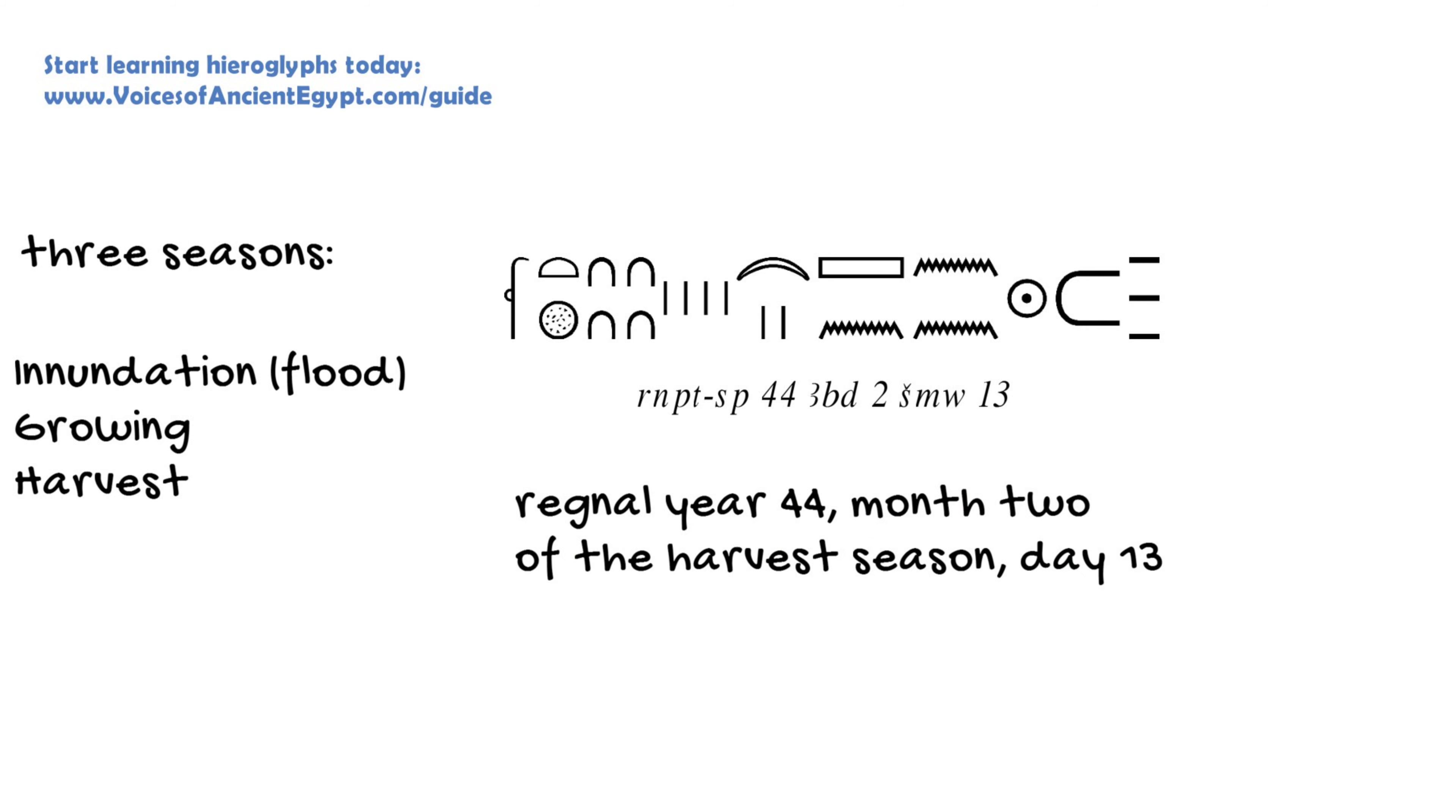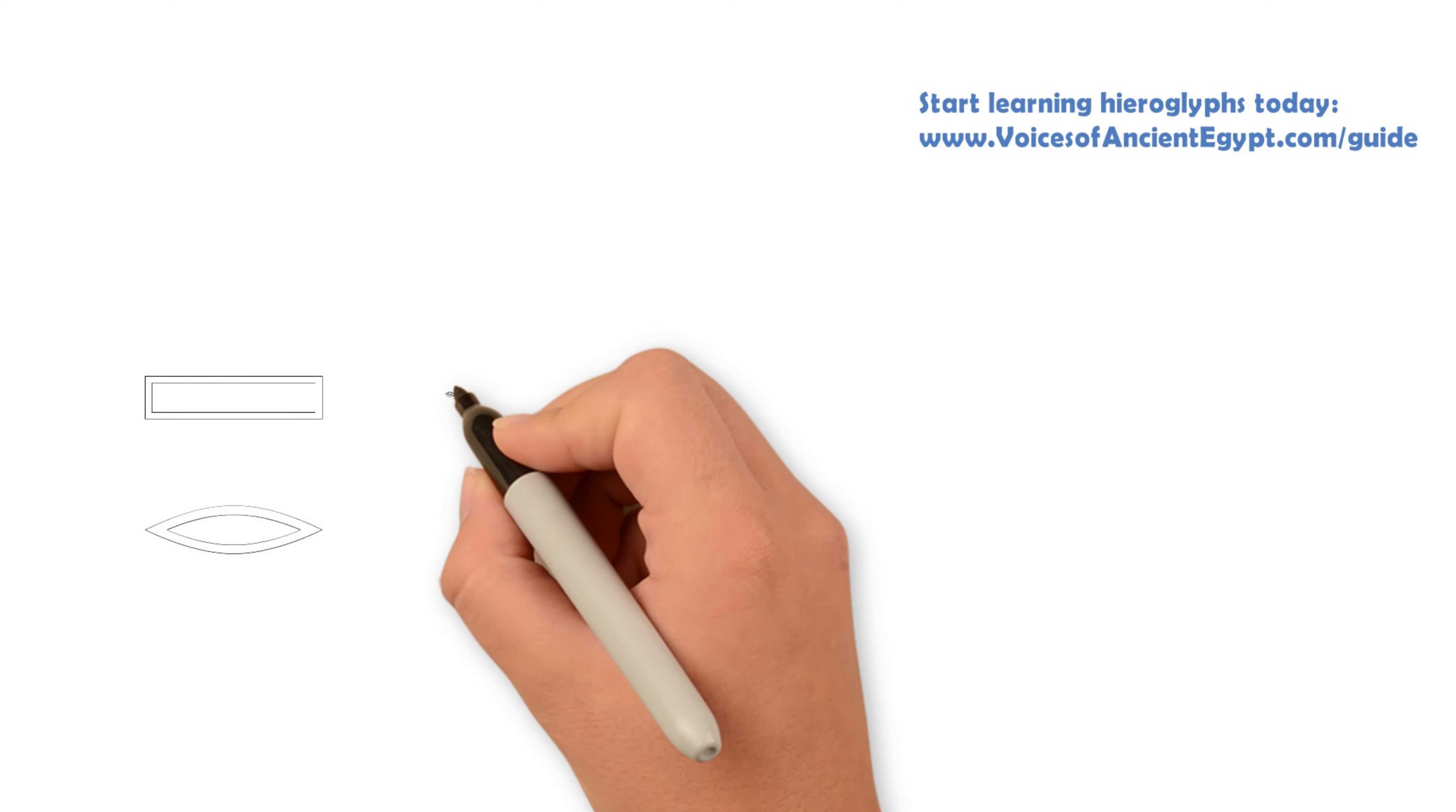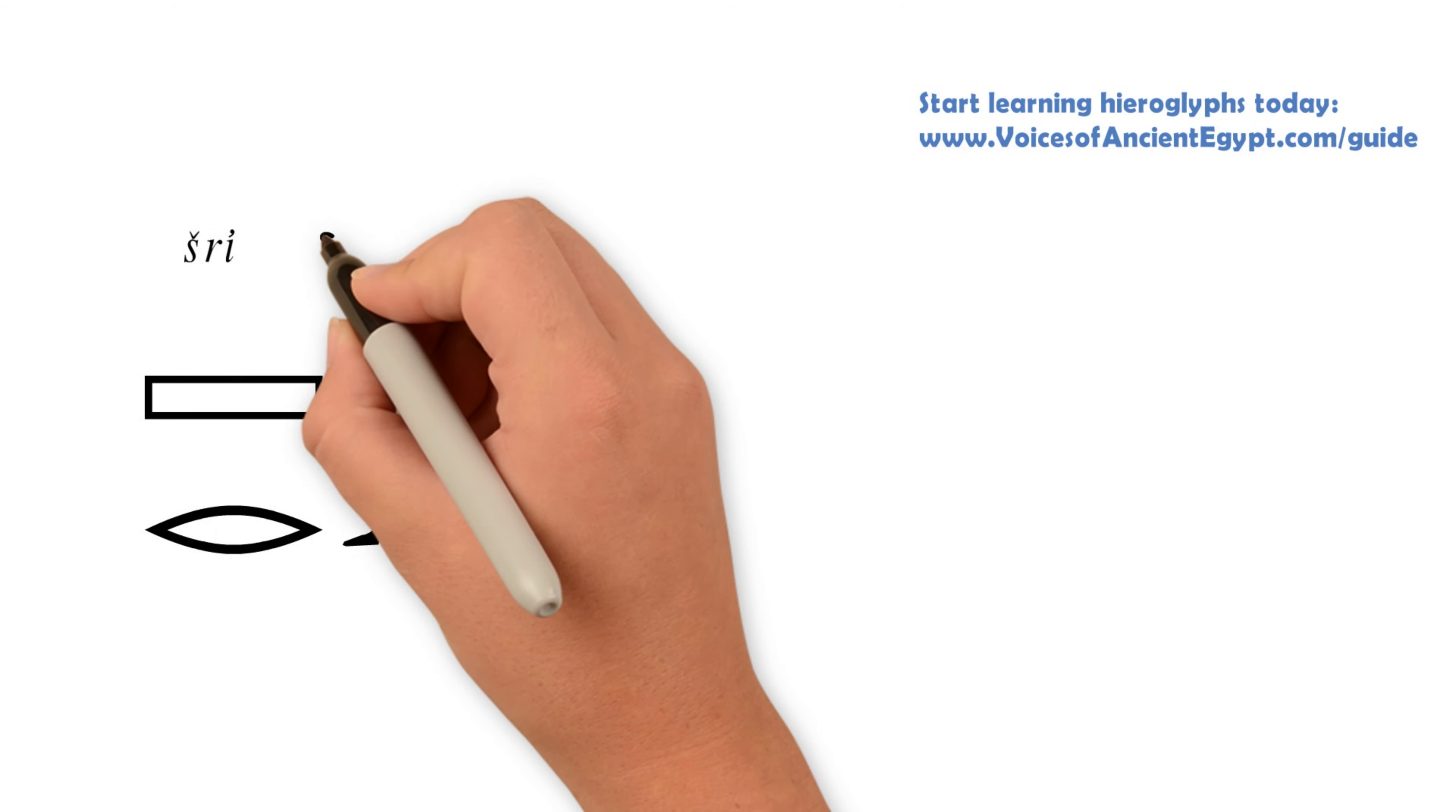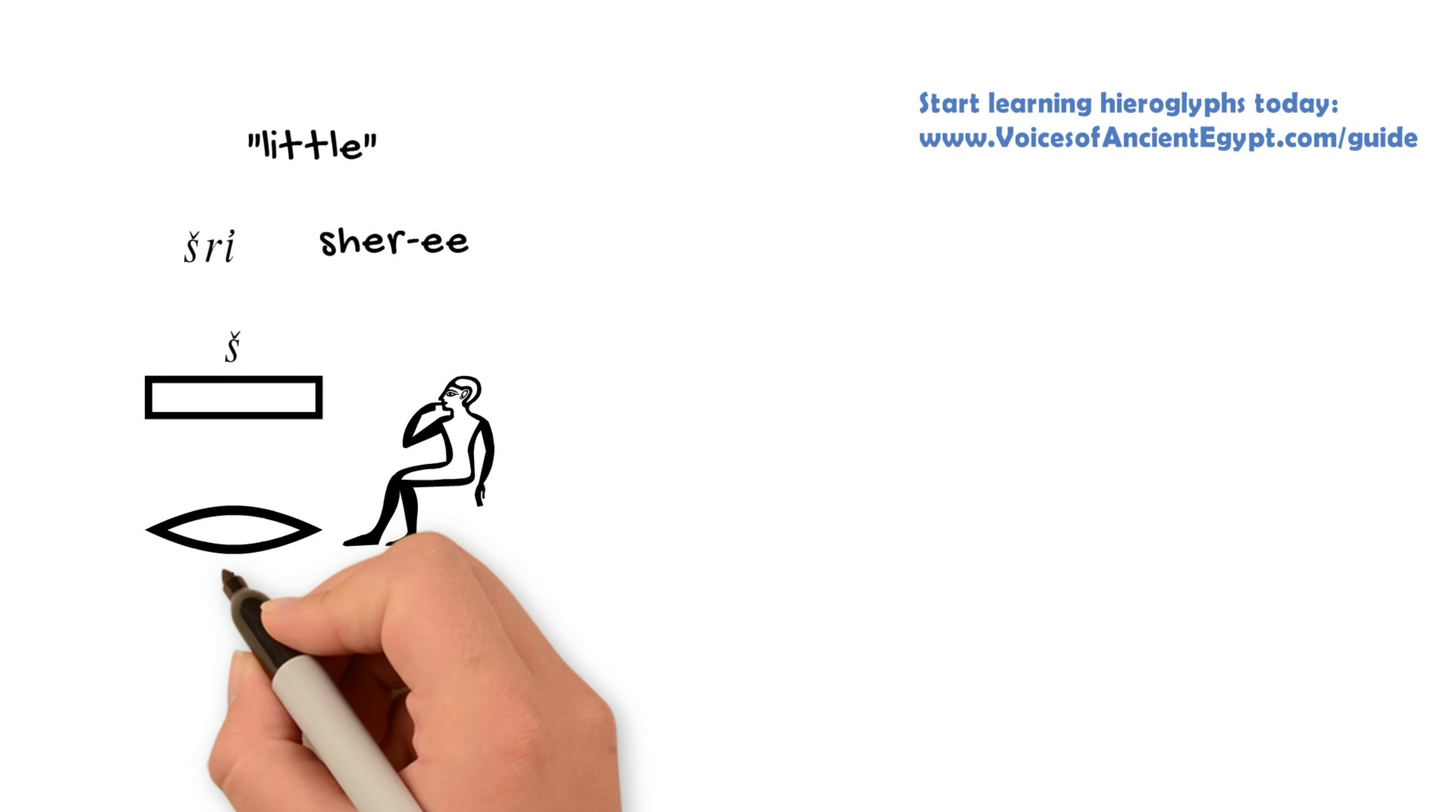Another common word you'll see this used in is the word sherry, which means little. And it's usually used to describe people who are younger and so forth. So you'll see this especially a lot of times in Egyptian names. You'll have somebody who is a younger family member with the same name, and they might add sherry on there.